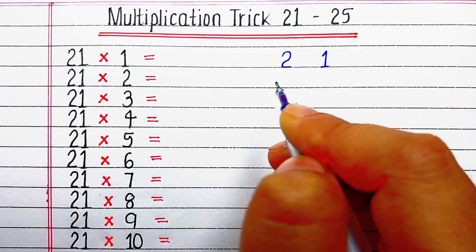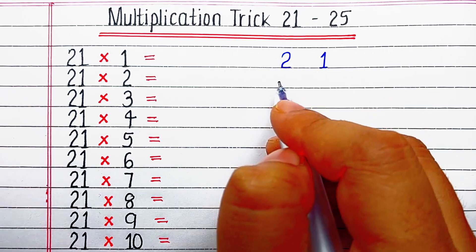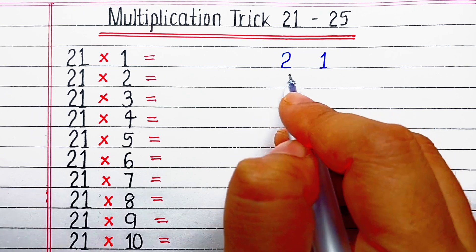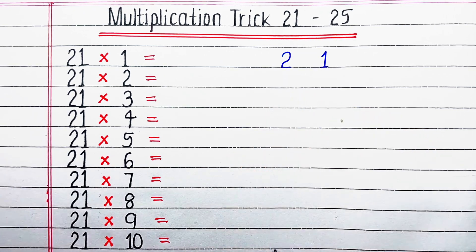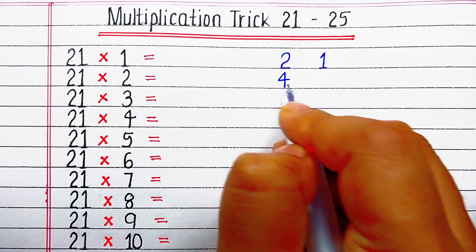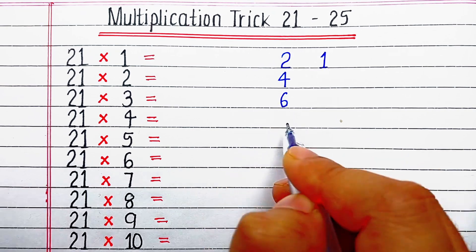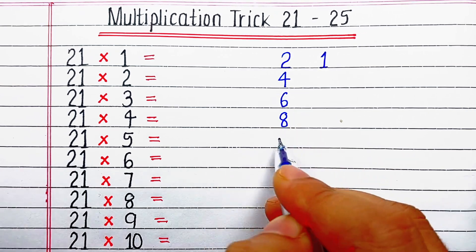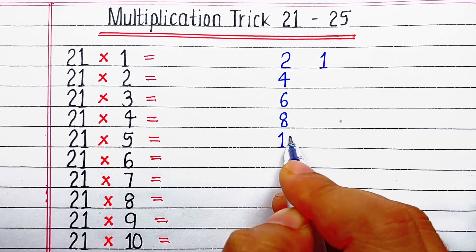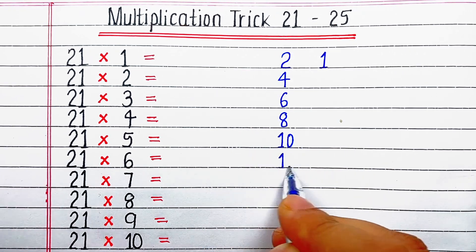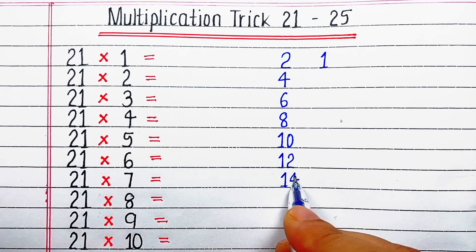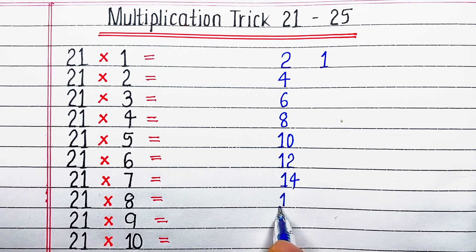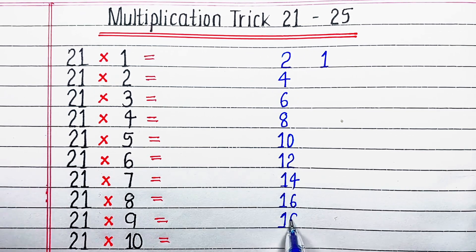So let's continue to table of 21. First we will write the table of 2: 2 ones are 2, 2 twos are 4, 2 threes are 6, 2 fours are 8, 2 fives are 10, 2 sixes are 12, 2 sevens are 14, 2 eights are 16, 2 nines are 18.